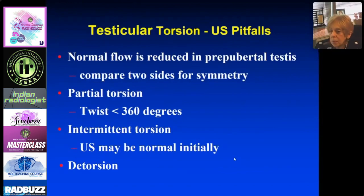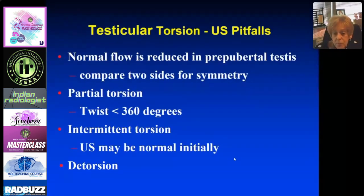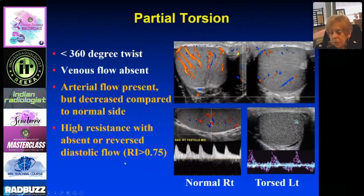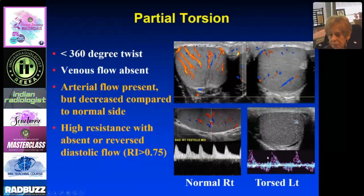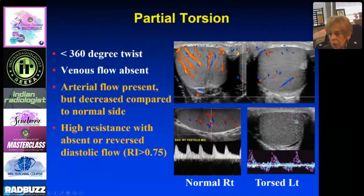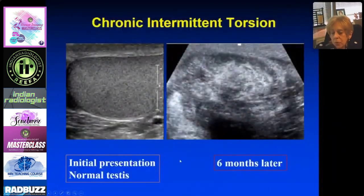Pitfalls: normal flow is reduced in the pre-pubertal testis so you can only compare sides. Partial torsion — a twist of less than 360 degrees — can lead to an erroneous diagnosis. On the affected side, flow is decreased and pulse Doppler shows decreased diastolic flow, reversed flow, and high resistance with no diastolic flow. This represents partial or early torsion. Even though it's not completely twisted, it still went to surgery — it was indeed torsed.